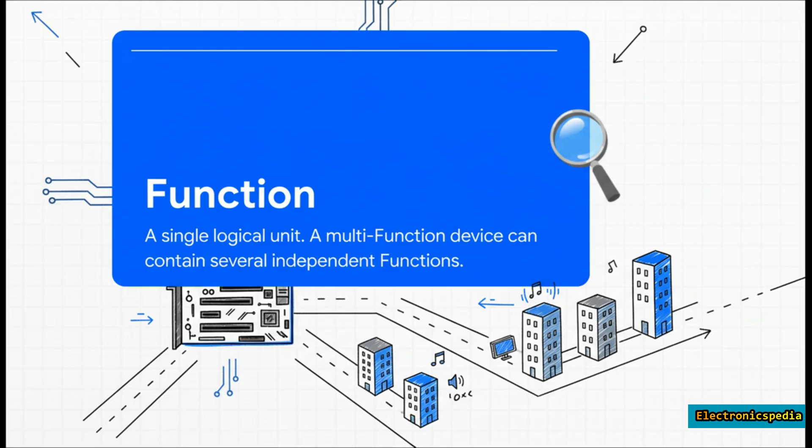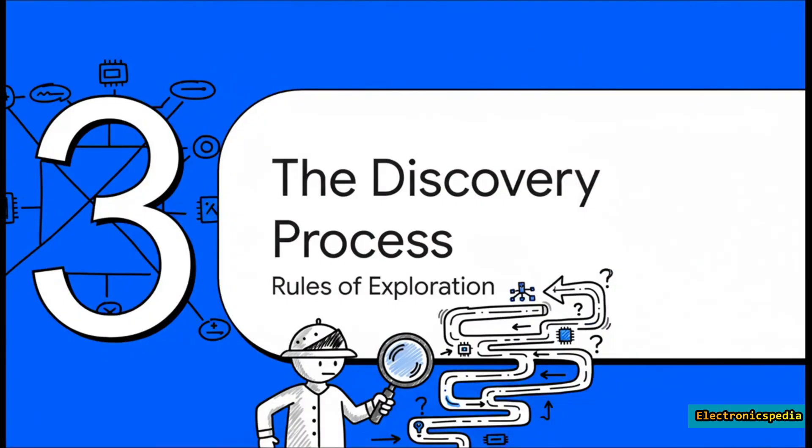Okay, so we have our mission and we have our mapping system, but how does the explorer actually do the search? It can't just wander around hoping for the best. It needs a strategy, a strict set of rules to make sure it checks every single path and doesn't miss a thing.